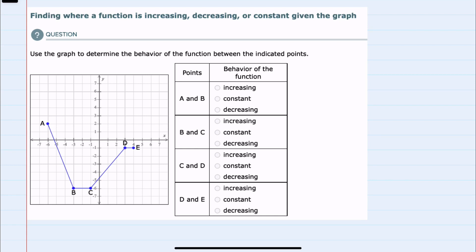In this video I'll be helping you with the ALEKS problem type called finding where a function is increasing, decreasing, or constant given its graph. We have a graph and we're asked between various points if it is increasing, constant, or decreasing.